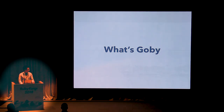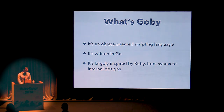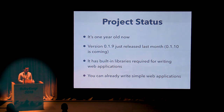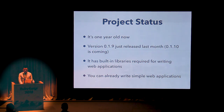So what's Gobi? It's an object-oriented scripting language written in Go. It's largely inspired by Ruby, from syntax to internal designs. It's currently over one year old and we just released version 0.19 in March. It already has some required libraries for writing web applications, so it can now be used to write simple apps.